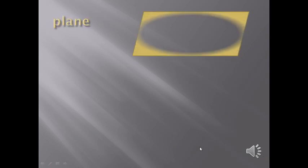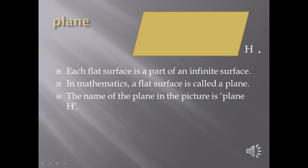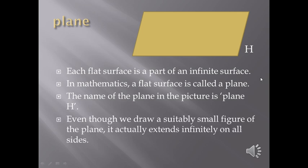Each flat surface is a part of an infinite surface. In mathematics, a flat surface is called a plane. The name of the plane in the picture is plane H. We use a single capital alphabet to name the plane as we name a point. You can either write this capital alphabet outside the plane or outside the given box or inside the box. Both is accepted. Even though we draw a suitably small figure of the plane, it actually extends infinitely on all sides.